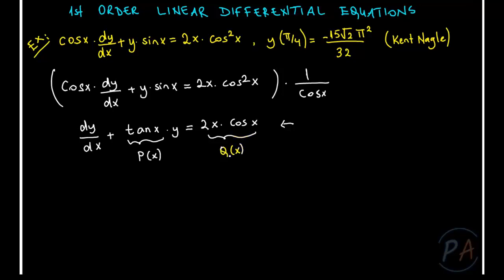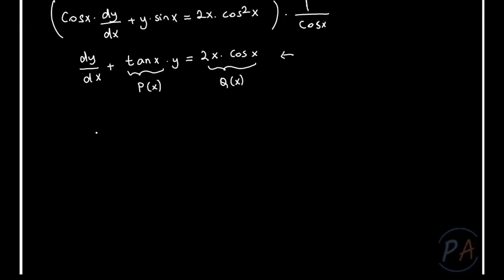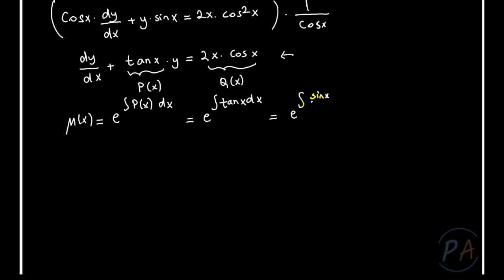I will solve this equation using the method of integrating factor. Let me calculate the integrating factor: μ(x) = e^(∫P(x)dx) = e^(∫sin(x)/cos(x) dx).